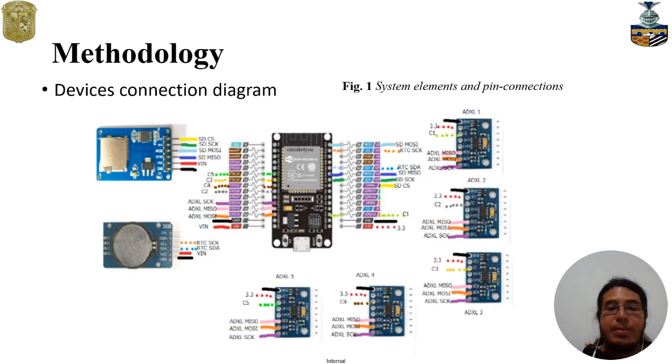Here we have the connection diagram. We have the card. We have the SD module that is connected to one SPI port. We have the five accelerometers, one for each limb and one in the chest, connected to the other SPI module that is over here, and the real-time clock that is using I2C communication over here.